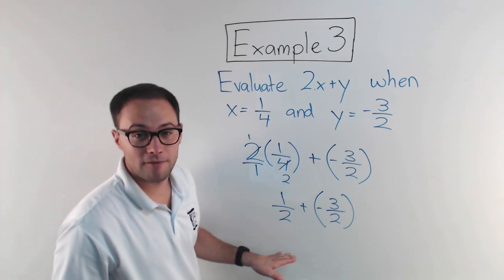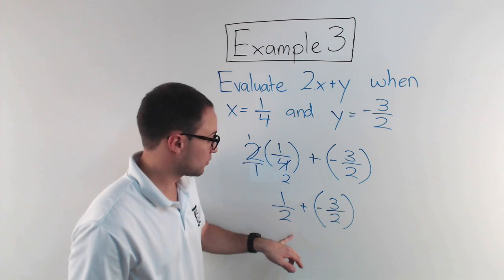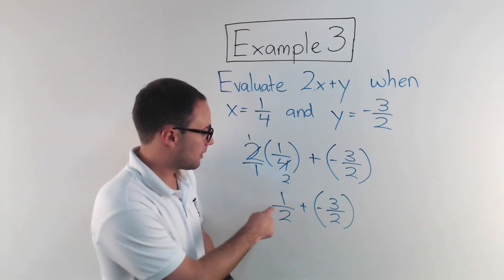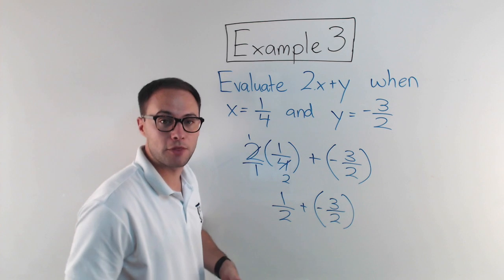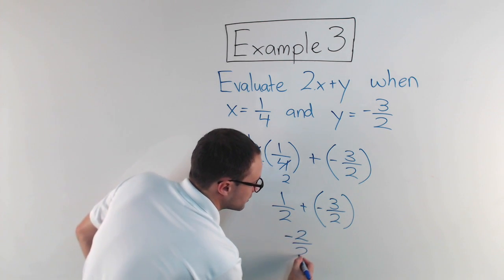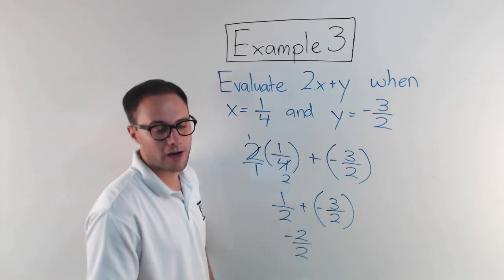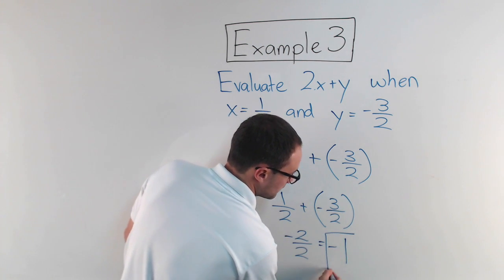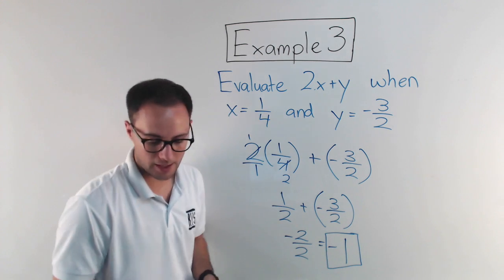Just like that first example, I've got to make sure I have common denominators, which I do, which is fantastic. So I just add one plus a negative three gives me negative two over two. The denominator stays the same. Well, negative two divided by two is just negative one. And I'm finished.